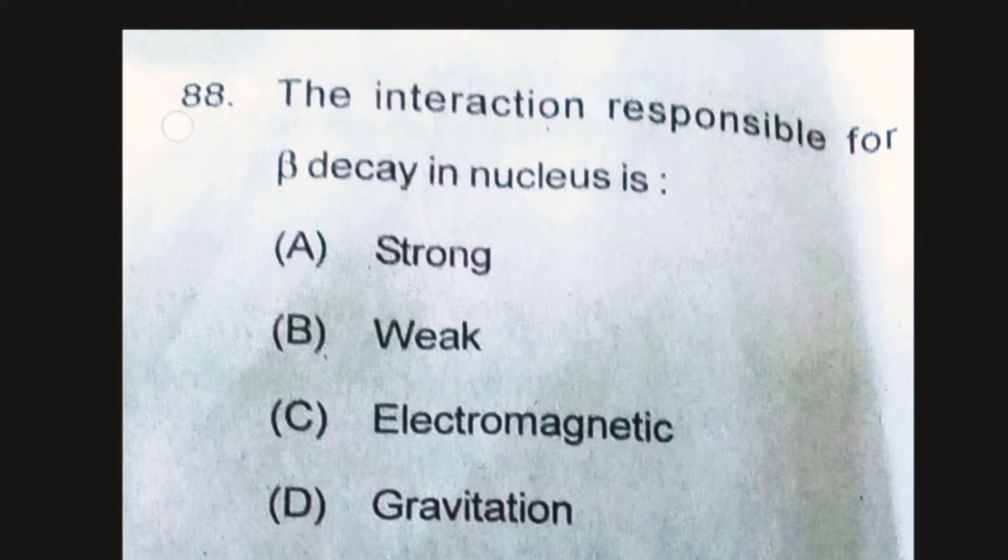In question number 88, the interaction responsible for beta decay in nucleus is strong, weak, electromagnetic, and gravitation. Here we know that most of the decay processes are governed by weak interaction. So, the answer is weak.